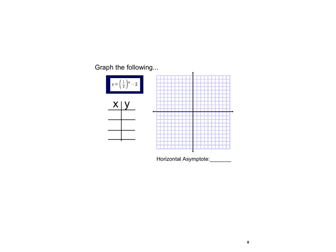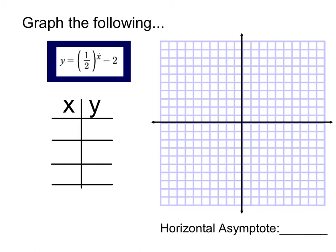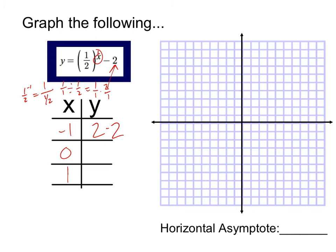Another example: (1/2) to the x, minus 2. The exponent has no addition or subtraction, so the minus 2 outside is a translation 2 units down. With x values of negative 1, 0, and 1: (1/2) to the negative 1 equals 1 over (1/2), which is 2, then minus 2 equals 0. (1/2) to the 0 is 1, minus 2 is negative 1. (1/2) to the 1 is 0.5, minus 2 is negative 1.5.